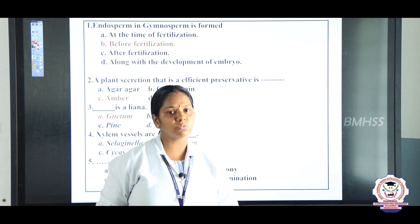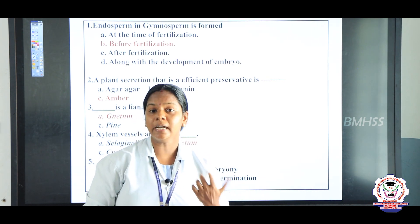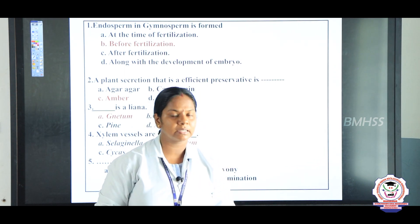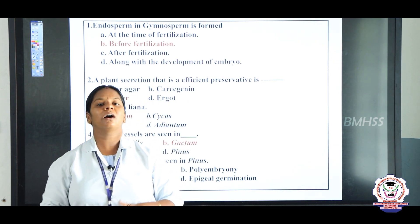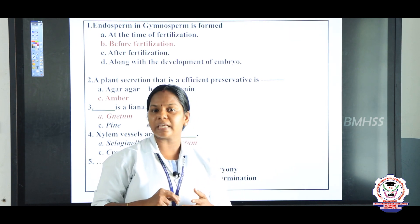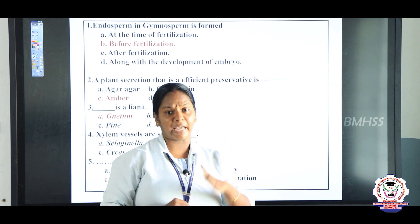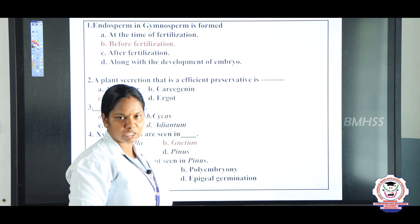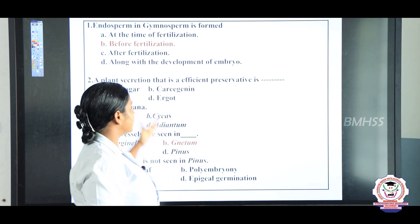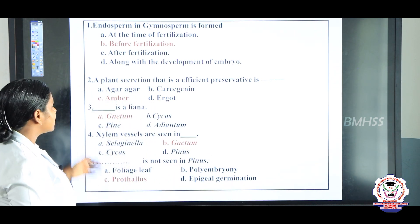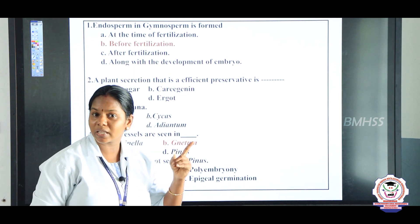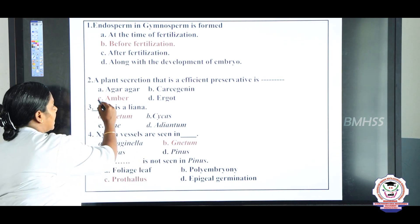In this session we discussed about gymnosperms. What is a gymnosperm? Naked seeds — the plants in which the seeds are naked. We discussed the characteristics of gymnosperms: root, stem, leaves, and types of wood. The person who classified gymnosperms is Sporne. And for assessment: a plant secretion that is an efficient preservative — the answer is amber.